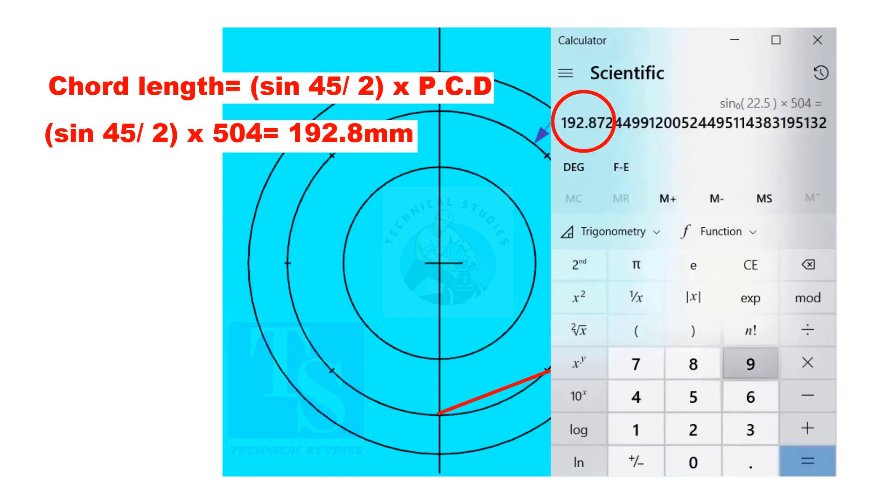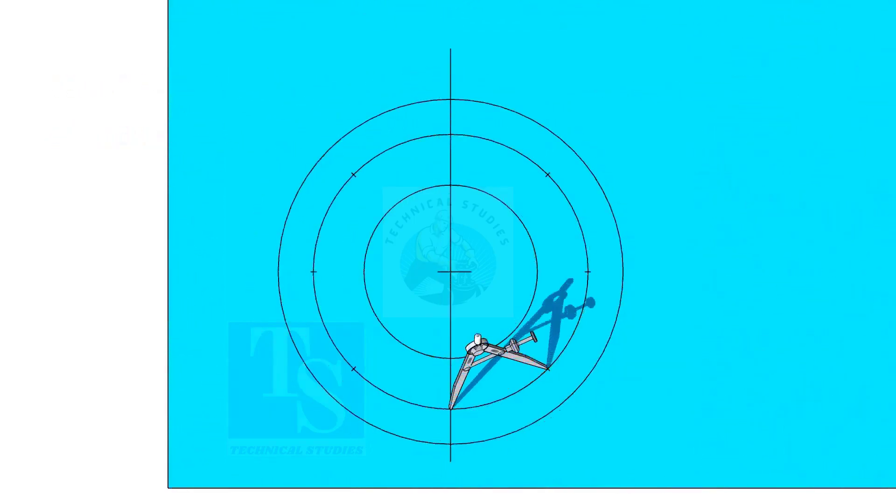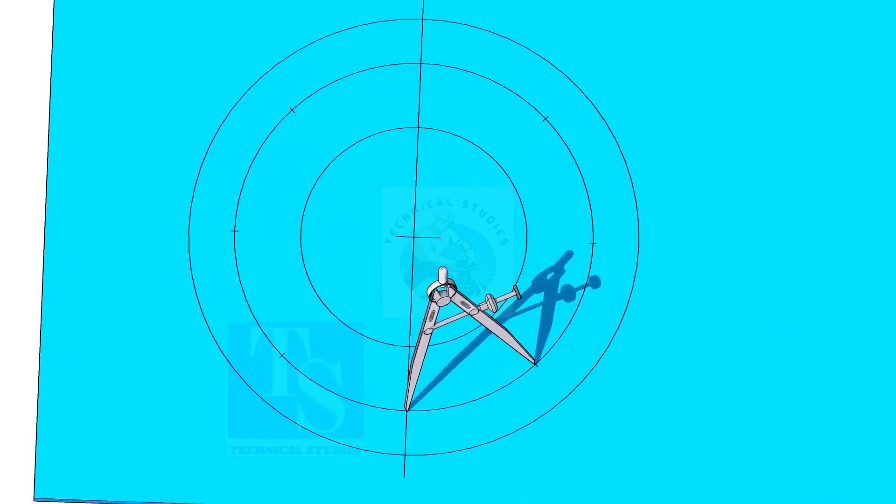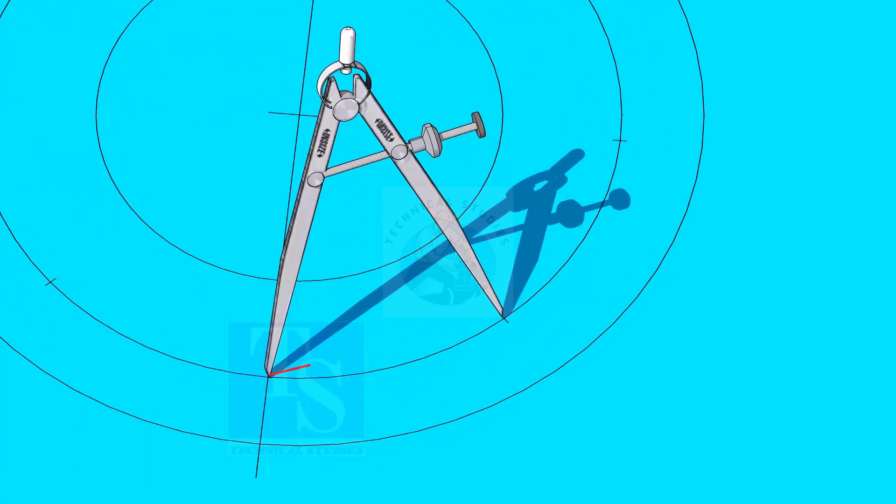The cord length is 192.8 millimeters. Adjust the divider to 192.8 millimeters and divide the PCD into 8 parts. Dividing the circle is not an easy job. It requires good practice. Make sure the last segment is the same as the other segments.